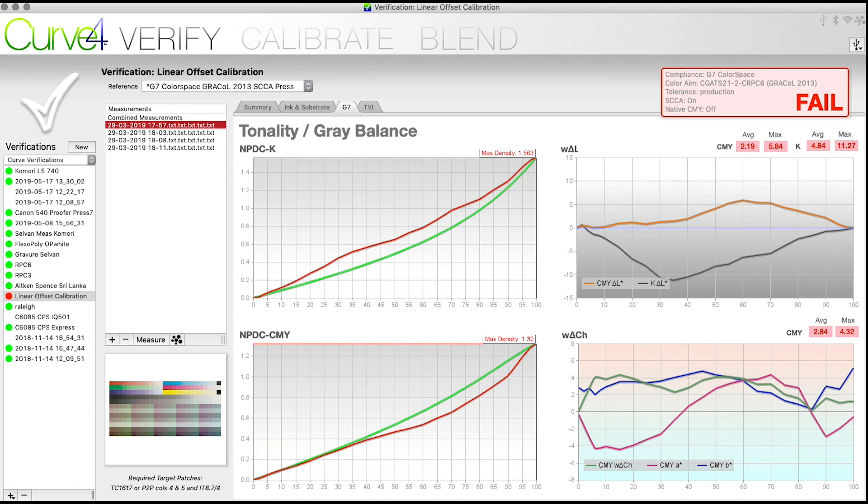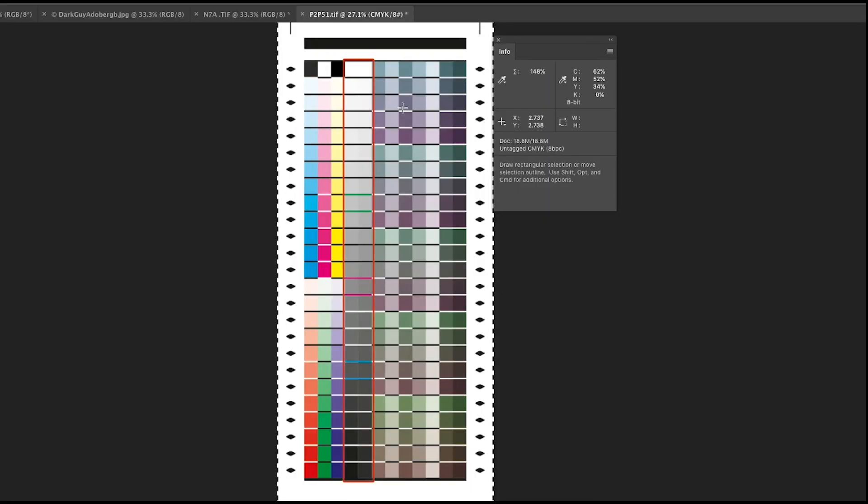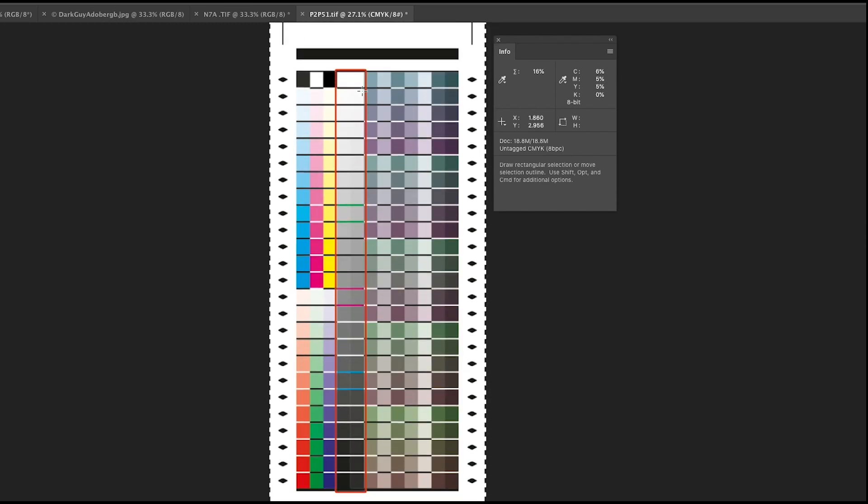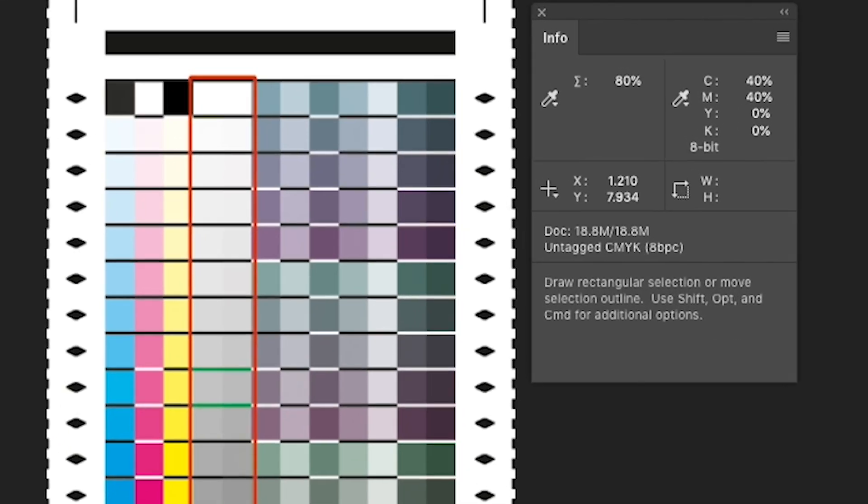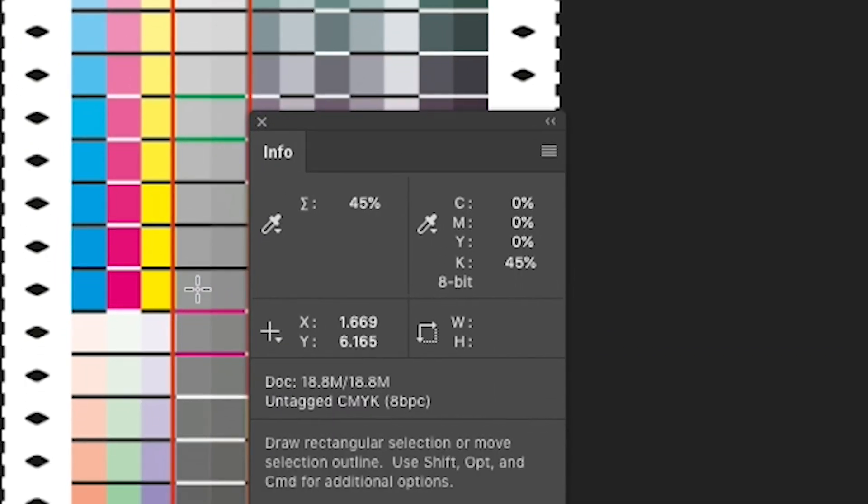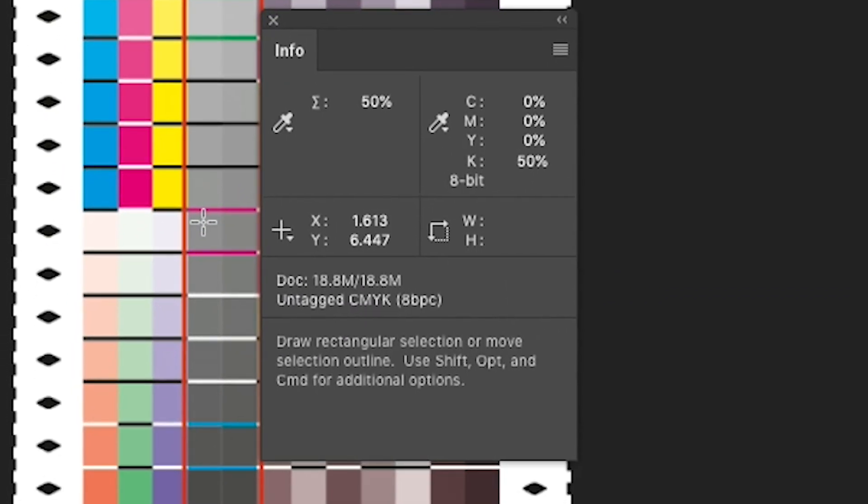Here is Photoshop and you can see this is a P2P51 target and it contains a ramp for just your black from zero to 100 percent. You can see here that I'm going to hover my cursor right over the 50 and you can see that it says 50 black.